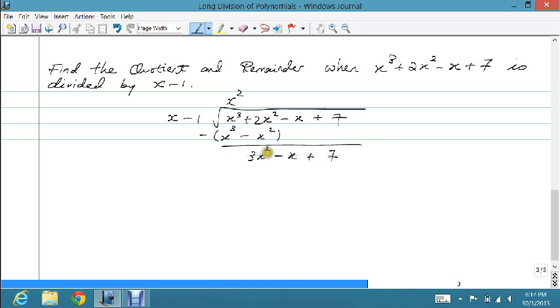Since this term here is x squared, I can continue the long division process. So the second term will be 3x. Since x minus 1 times 3x gives me 3x squared minus 3x. Again, we take the difference.